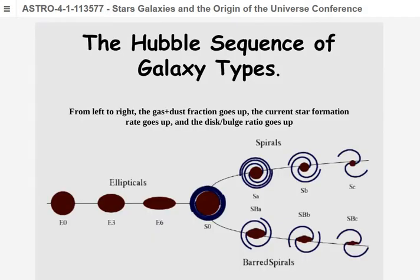We're going to cover the Hubble sequence. Edwin Hubble had the lion's share of access to the biggest telescope in the world in the early 20th century — the so-called Hooker telescope, a hundred-inch telescope. That was big enough that you could begin to see structure rather than just a fuzz ball. With it you could actually see galaxy structure, and this is how he classified galaxies. There are elliptical galaxies — featureless, fuzzy footballs without spiral arms, basically a central bulge without any disk.